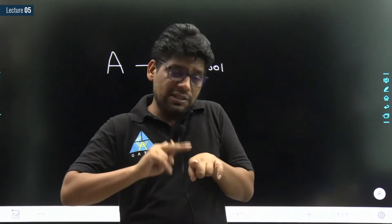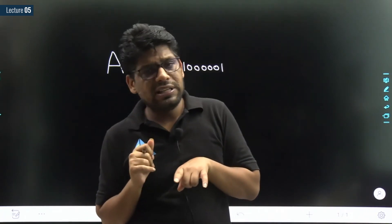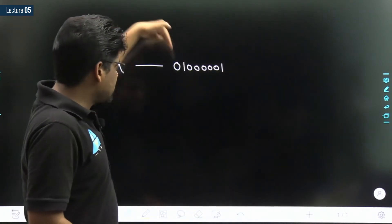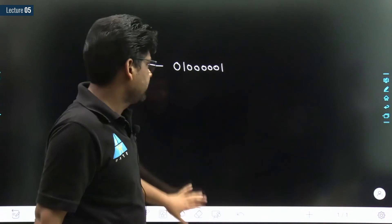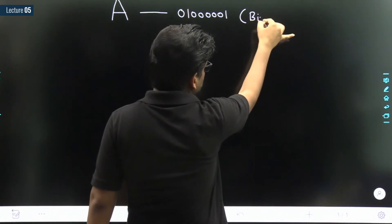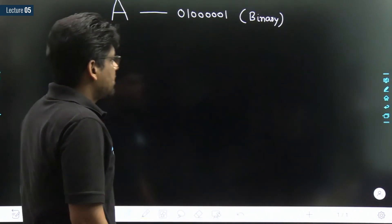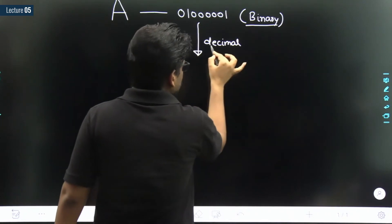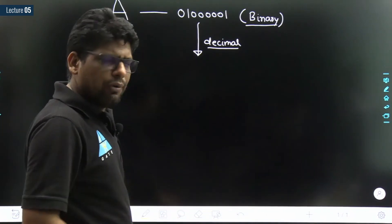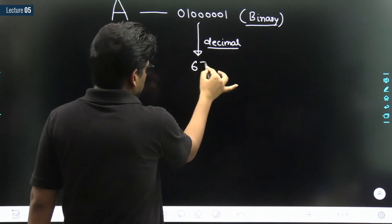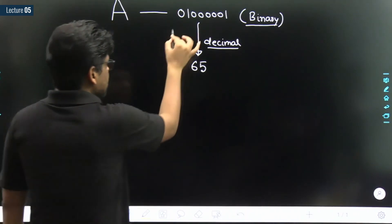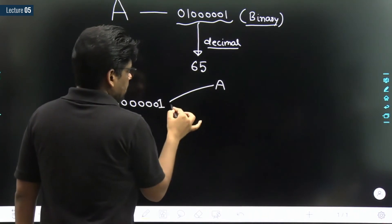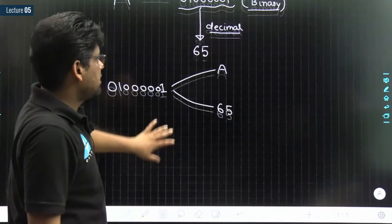Whatever you press from the keyboard gets converted into 0s and 1s — that is what the machine and your program will receive. So even if you press 'A', there must be some particular sequence of 0s and 1s for it. This number is written in binary number system. If I convert this sequence into the decimal number system, the actual value is 65. So try to understand: the same sequence represents a symbol as well as an integer — 'A' as a symbol, and 65 as an integer.